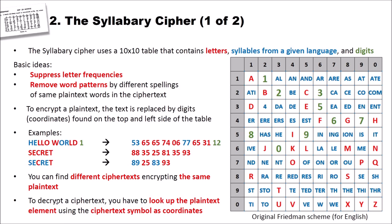To decrypt a ciphertext, you have to look up the plaintext element using the ciphertext symbol as coordinates. For instance, when you have 89 here, you just go to 8, then you go to 9, and you know this has to be SE.